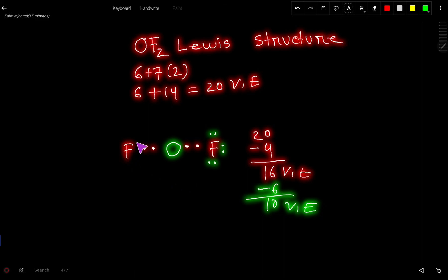So to satisfy the octet for this fluorine atom, this fluorine will take a maximum of 6 valence electrons. So we have 4 valence electrons left now. These 4 valence electrons will go on oxygen.